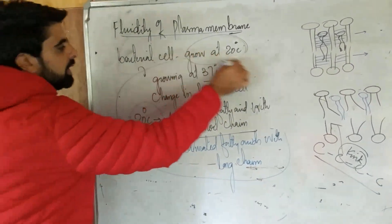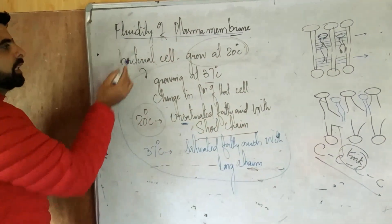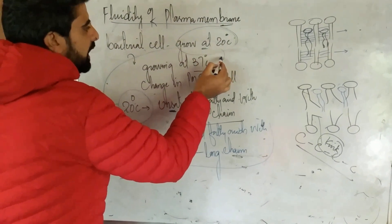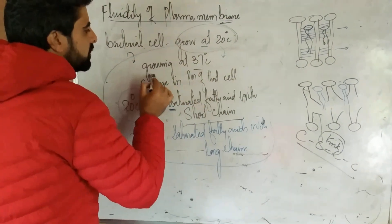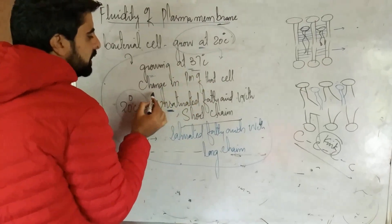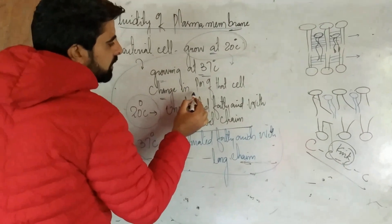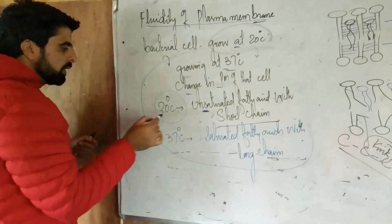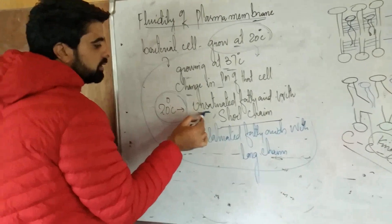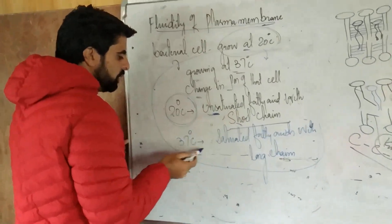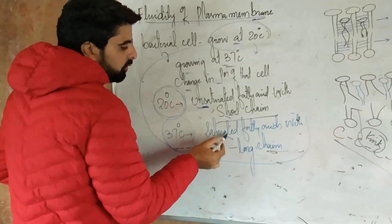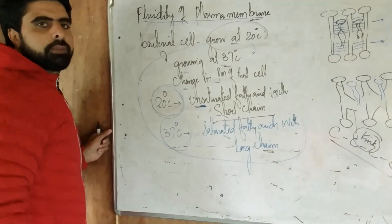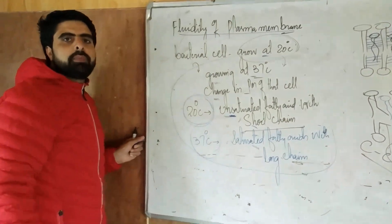This question may be asked in examination and the question is very easy. If a bacterial cell is grown at 20 degrees Celsius, and the same cell is taken and grown at 37 degrees Celsius, what will be the change in the fatty acids of the plasma membrane? The answer is clear: at 20 degrees Celsius, there were more unsaturated fatty acids with short chains; at 37 degrees Celsius, there will be more saturated fatty acids with long chains. Tomorrow we will discuss about the asymmetry of the plasma membrane.